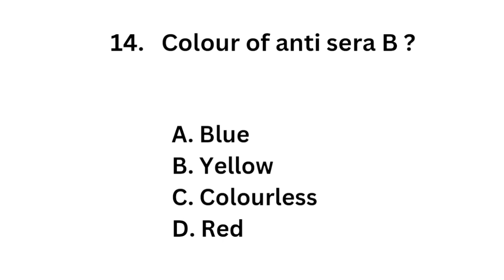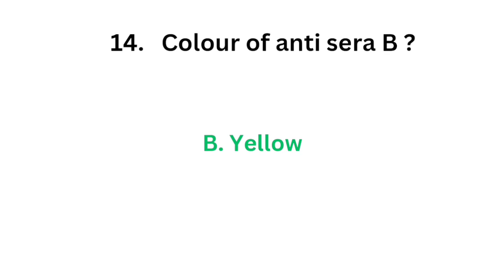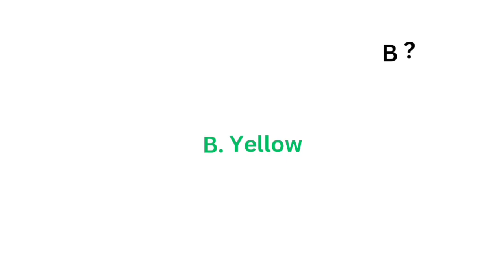Question 14. Color of anti-sera B: Option A, Blue; Option B, Yellow; Option C, Colorless; Option D, Red. The correct answer is Option B, Yellow. The color of anti-sera B is yellow.